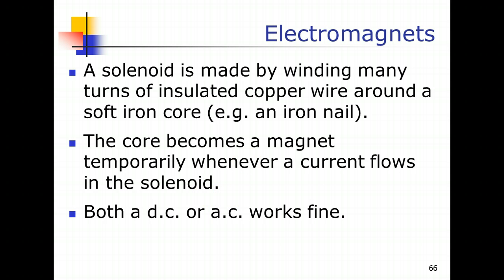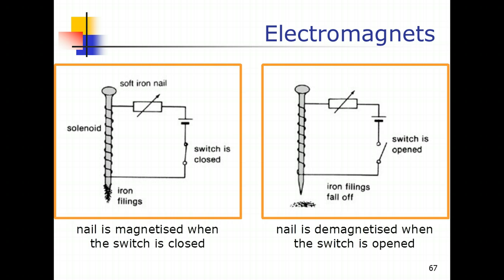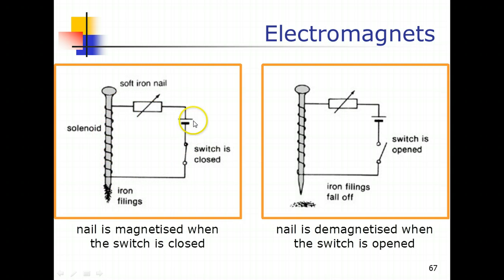The first example of the use of electromagnets is to attract magnetic materials. The circuit consists of a soft iron nail — which is easily magnetized and demagnetized — with insulated copper wires wound around it forming the solenoid, a variable resistor to adjust current, a dry cell providing electrical power, and a switch.